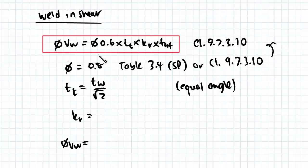Okay, so we've got phi. Moving on to our next variable, throat thickness. We have an equal angle fillet weld, so this makes it easy for us. We can use TW on root 2 to find our throat thickness. Our throat thickness is the plane in which shear acts along.